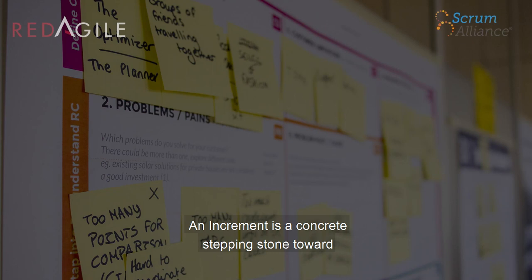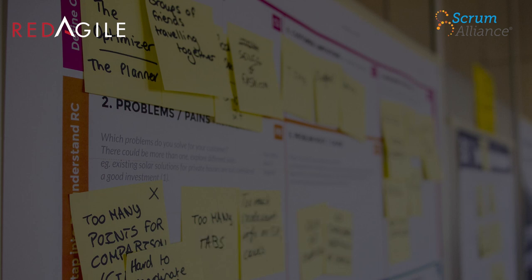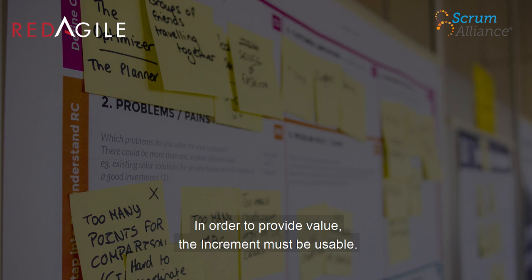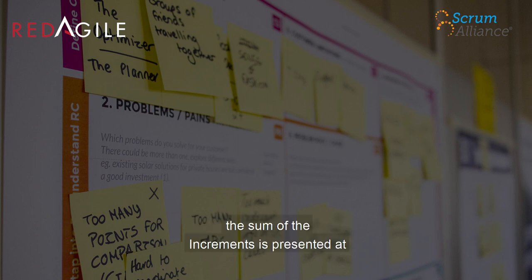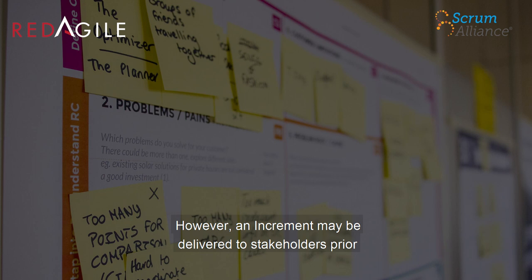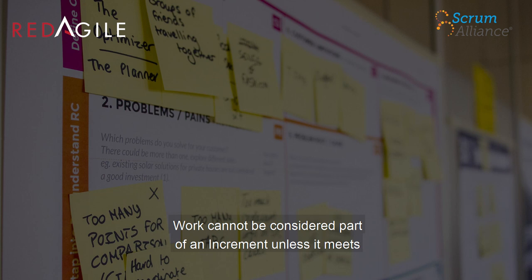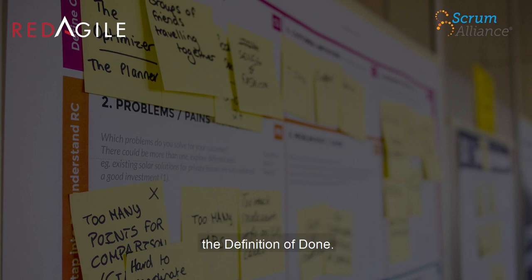Increment. An increment is a concrete stepping stone toward the product goal. Each increment is additive to all prior increments and thoroughly verified, ensuring that all increments work together. In order to provide value, the increment must be usable. Multiple increments may be created within a Sprint. The sum of the increments is presented at the Sprint Review, thus supporting empiricism. However, an increment may be delivered to stakeholders prior to the end of the Sprint. The Sprint Review should never be considered a gate to releasing value. Work cannot be considered part of an increment unless it meets the definition of done.